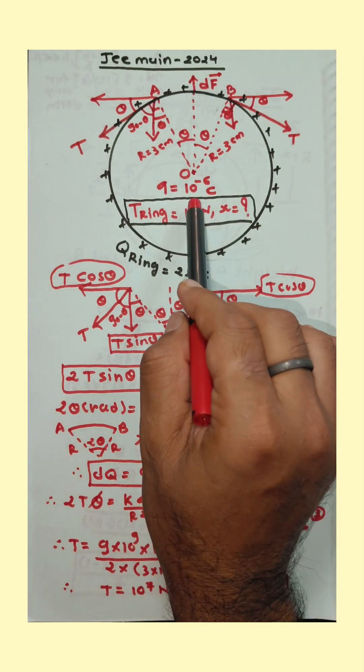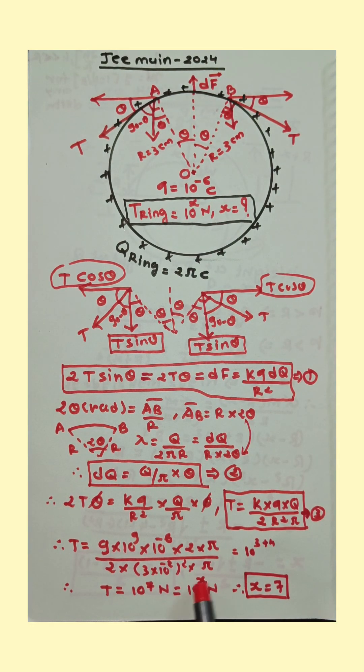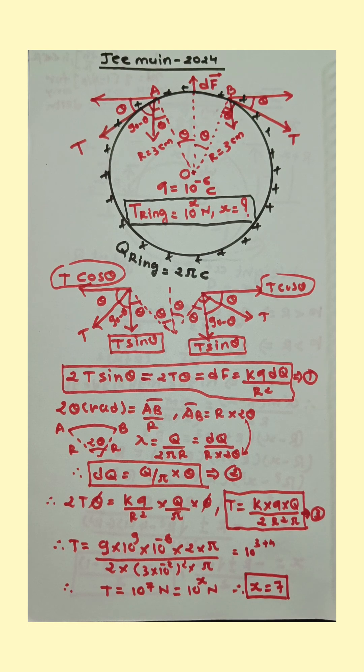But here T is given 10 raised to x newton. So 10 raised to 7 is equal to 10 raised to x. So x is equal to 7. Thank you.